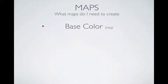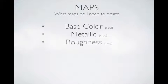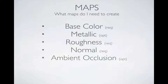The first map is base color, then we have metallic, roughness, normal, and ambient occlusion. Base color is kind of like what diffuse used to be, metallic is a new one, roughness is kind of like gloss used to be, normal is the same as it was, and ambient occlusion is the same as it was — it's just input differently.